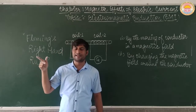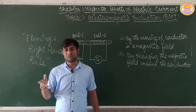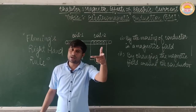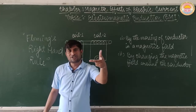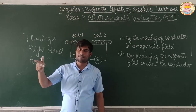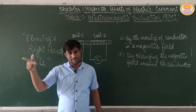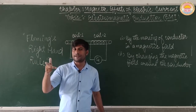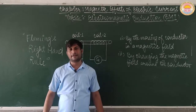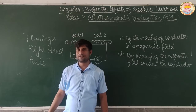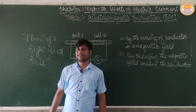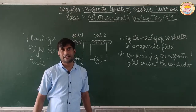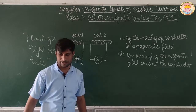The application of Fleming's Left Hand Rule is to find the direction of force or motion, used in the electric motor. The application of Fleming's Right Hand Rule is to find the direction of induced electric current, and its application is in the electric generator. This is an important exam question: remember the difference — left hand rule for force/motion, right hand rule for induced current direction.